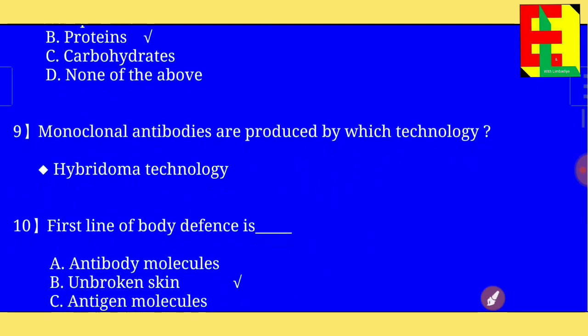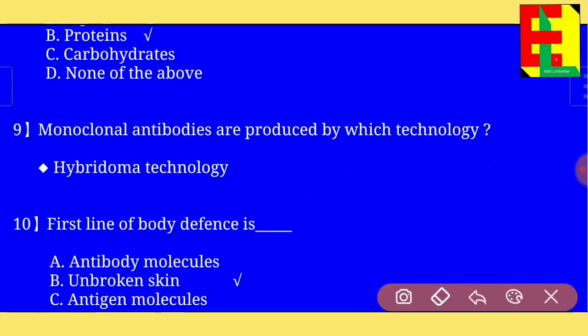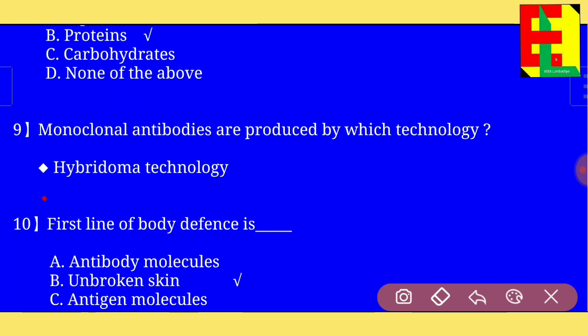Question number nine: monoclonal antibodies are produced by which technology? The answer is: monoclonal antibodies are produced by hybridoma technology.